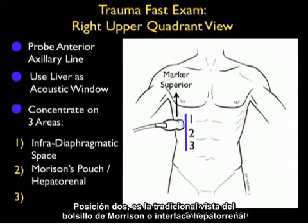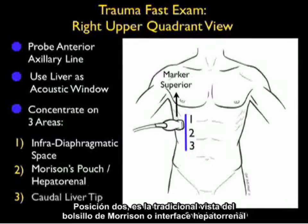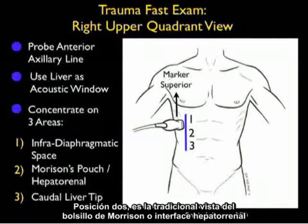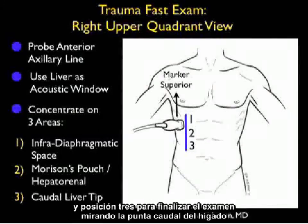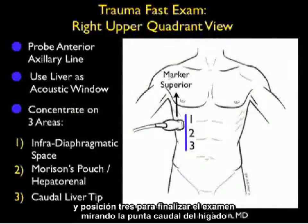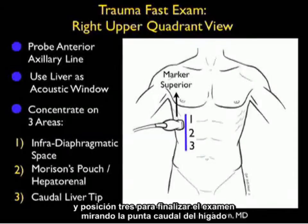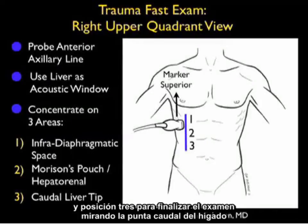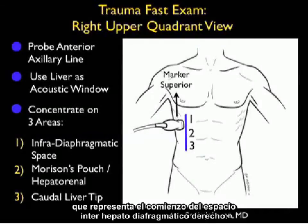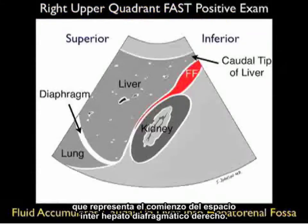Position two is the traditional Morrison's pouch or hepatorenal interface, and position three rounds out the exam by looking at the caudal liver tip, representing the beginning of the right pericolic gutter.